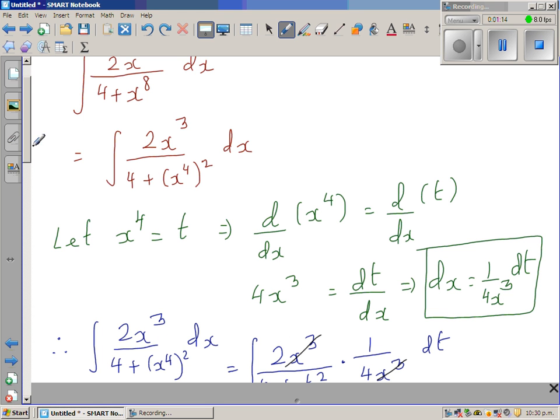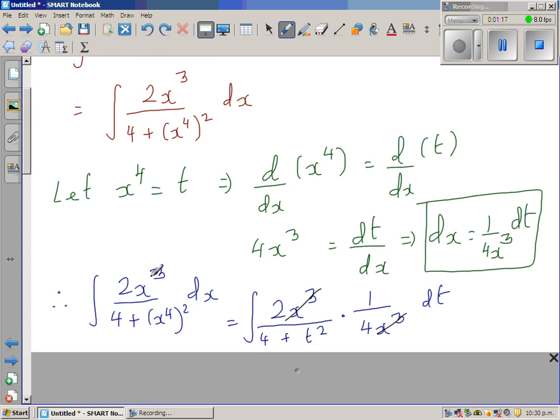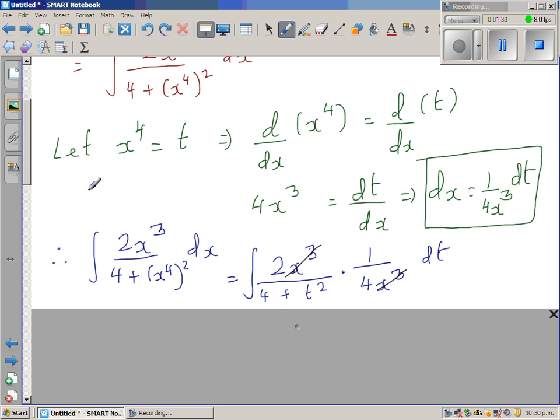This changes to 2x cubed over 4 plus t squared times 1 over 4x cubed dt. So this x cubed and this x cubed gets cancelled, and this is 2 over 4, which becomes half.